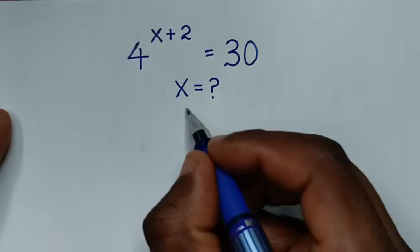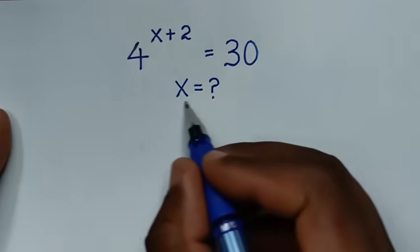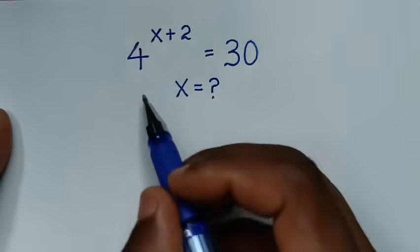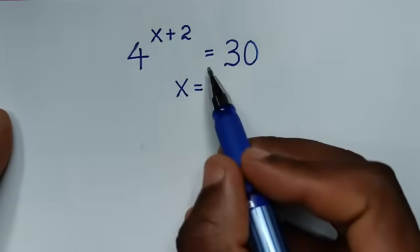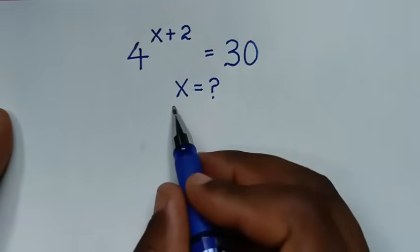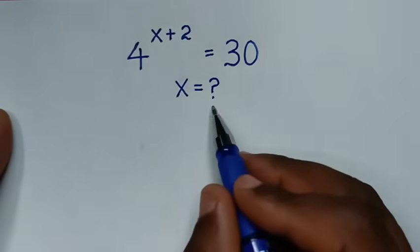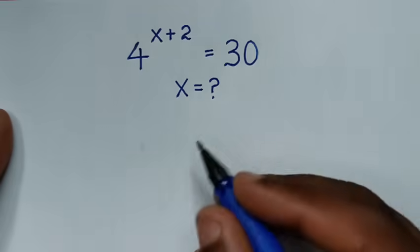Hello, you are welcome to solve this math problem: 4 to the power of (x plus 2) is equal to 30. We need to find the value of x from this equation.